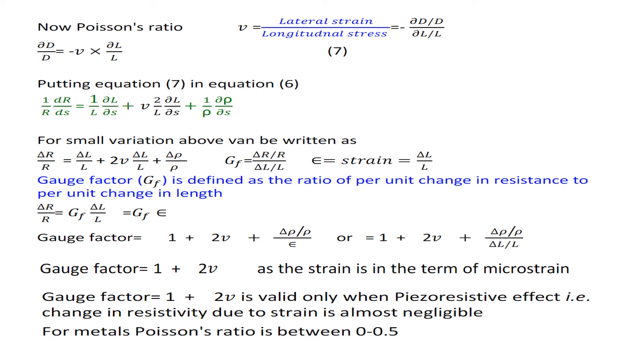Gauge factor = 1 + 2ν as the strain is in the term of microstrain. This factor = 1 + 2ν is valid only when piezoresistive effect, means change in resistivity due to strain, is almost negligible. For metals, Poisson's ratio is between 0 to 0.5.